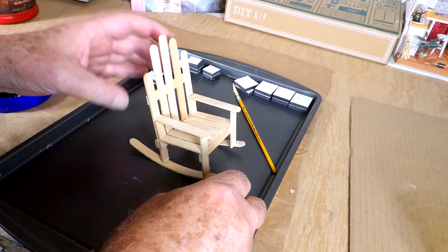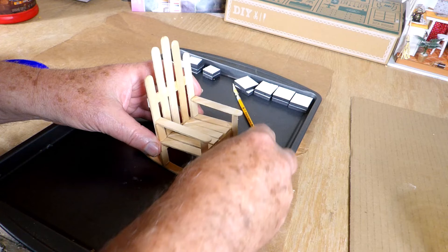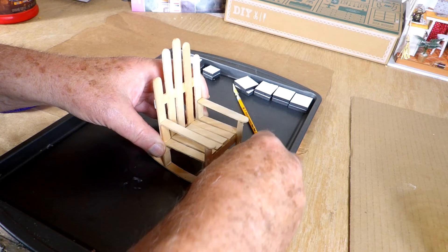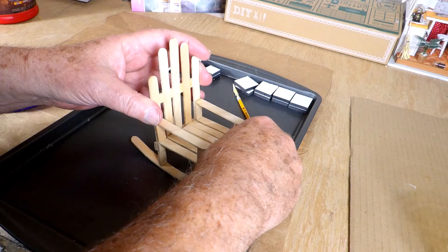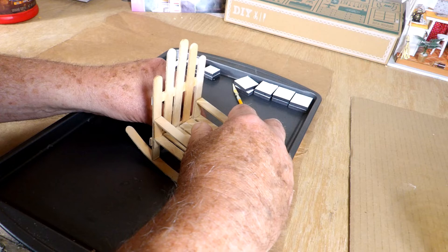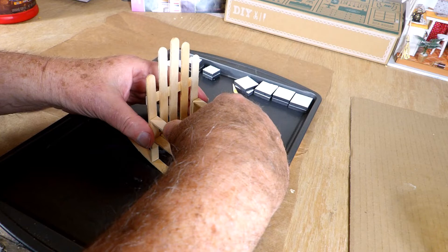And there we have them glued on. And we'll let the glue dry, and the rocking chair will be complete. Back a little bit. Like that.